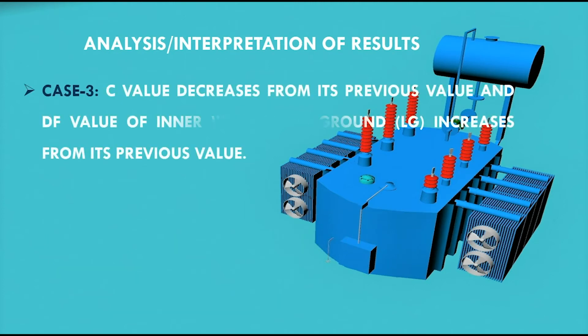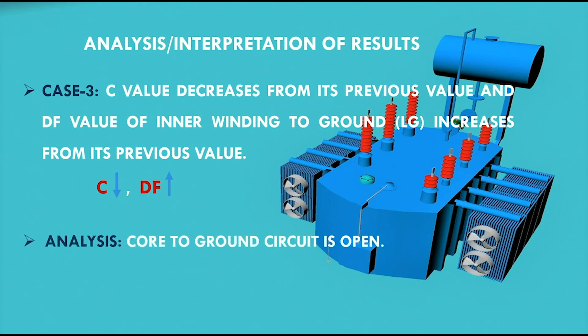In third case, if C value decreases from its previous value and DF value of inner winding to ground that is LG increases from its previous value, it means that core to ground circuit is open.